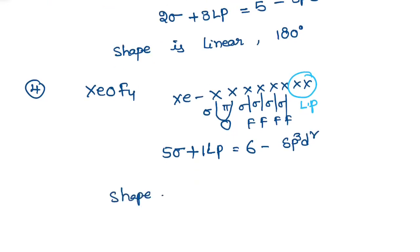But lone pairs are there, so its shape is quite different. Even if you get sp³d², with lone pairs its shape is square pyramidal. The lone pair we are representing like this. Bond angle is 90 degrees. This is about our simple trick for hybridization. It is very useful for competitive examinations to find out hybridization, shape, and bond angle.